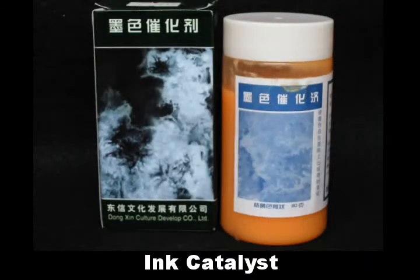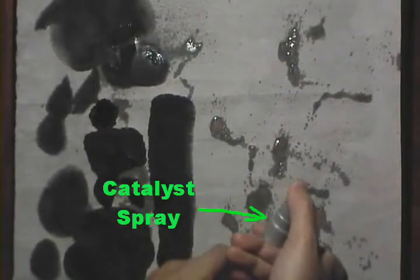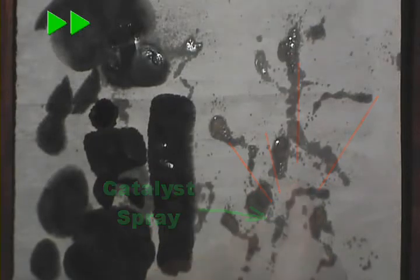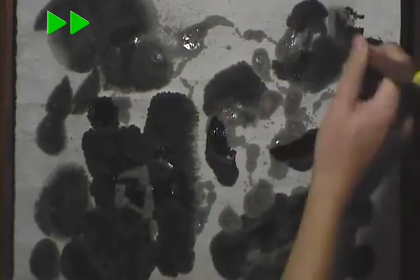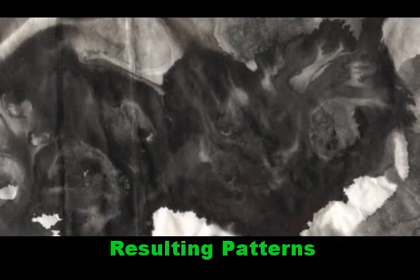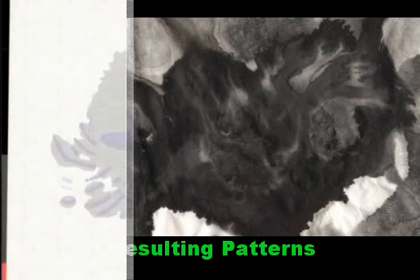Ink catalyst is a new art material. It can be used to produce severe branching patterns. We model ink catalysts as a material that blocks the ink flow.